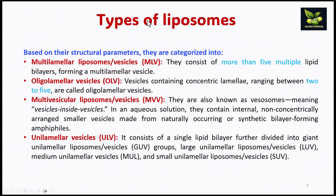Now discussing types based on structural parameters: if there are more than 5 multiple lipid bilayers, then it is multilamellar. If there are 2 to 5 rings, then it is oligolamellar. Multivesicular liposomes, also known as vesosomes, contain vesicles inside vesicles — smaller vesicles non-concentrically arranged inside an aqueous solution, made from naturally occurring or synthetic bilayer-forming amphiphiles. Unilamellar consists of a single lipid bilayer, further divided into giant, large, medium, and small.